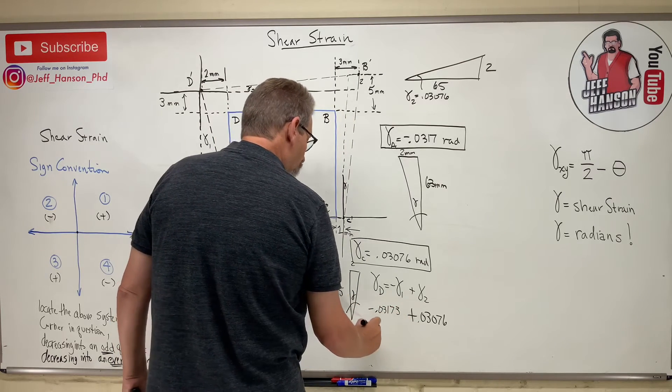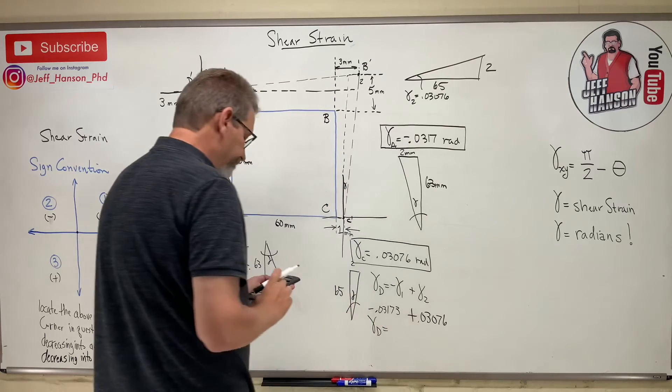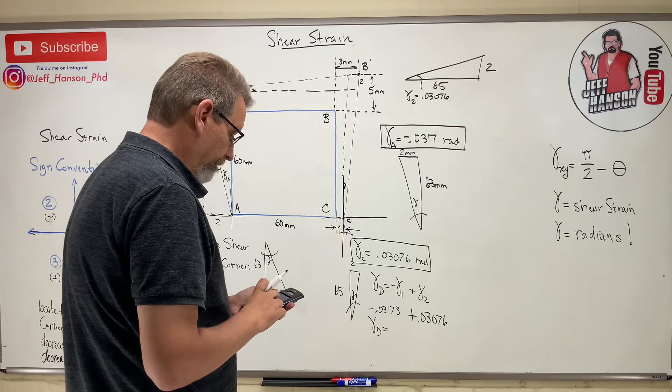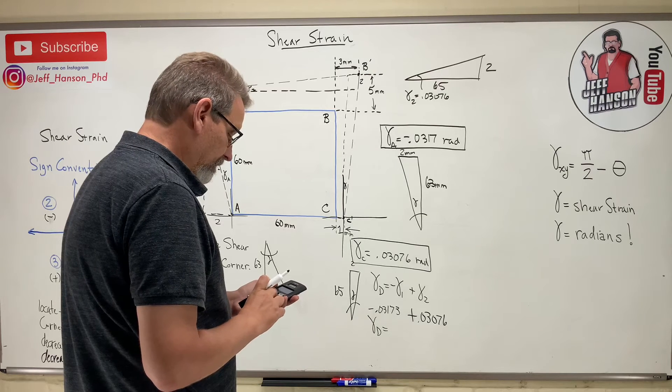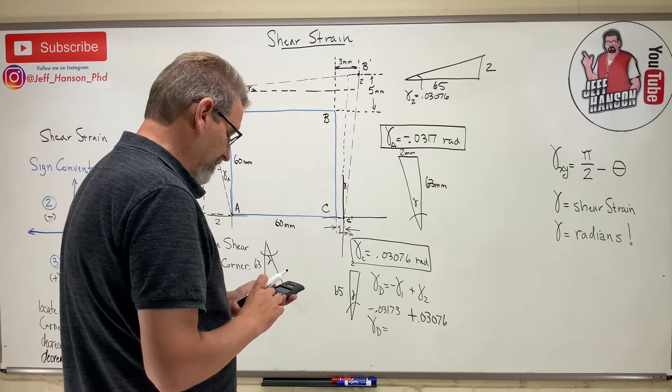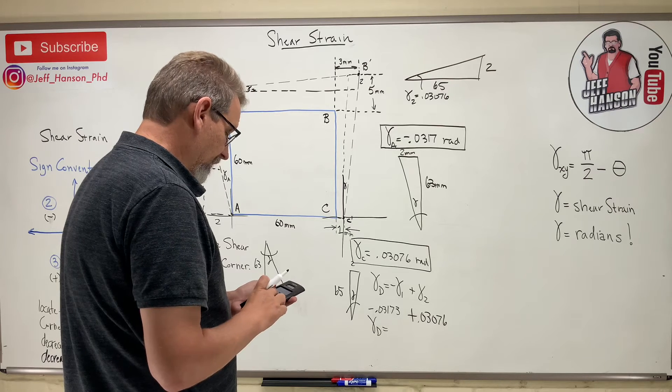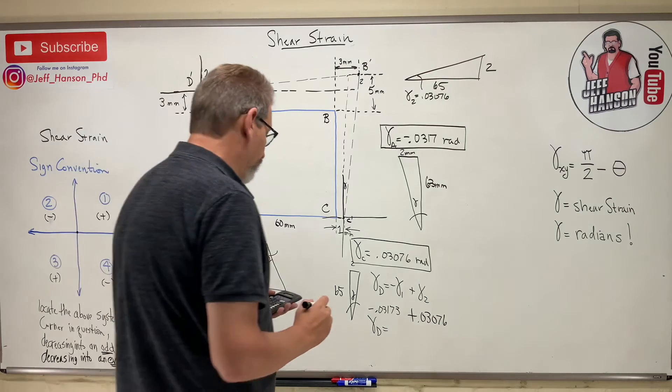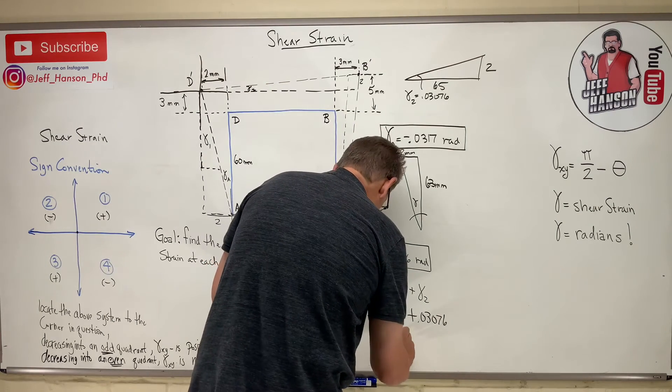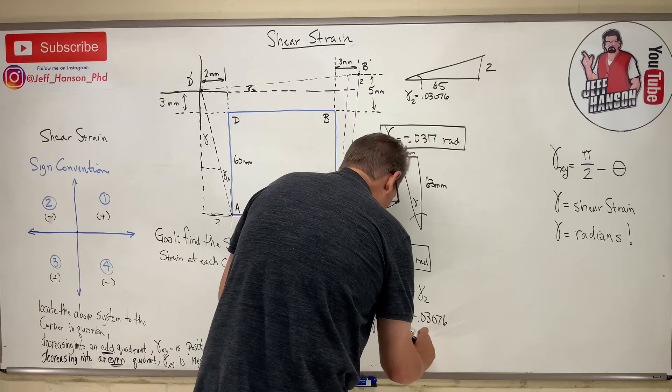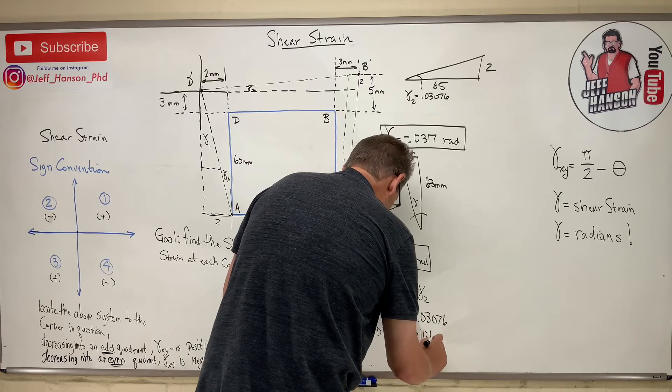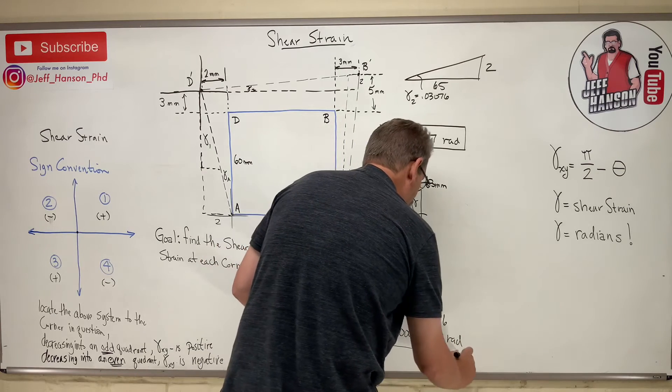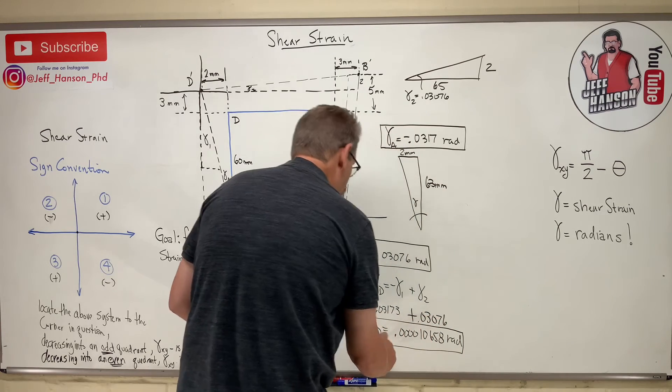So gamma D is equal to this guy minus this guy, which is 0.00003410658. There's gamma D.